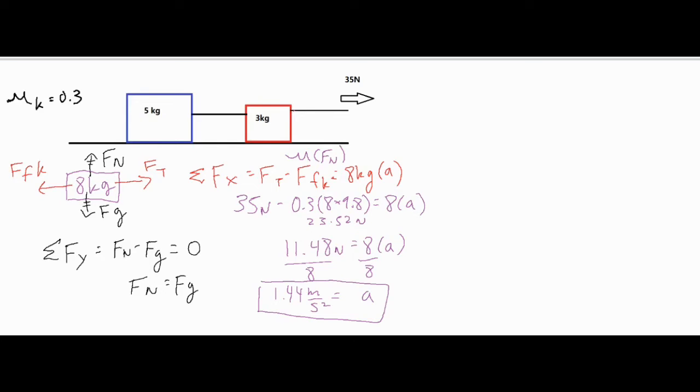Now what we can do is if we analyze each of the boxes on their own as their own separate systems, we have the three kilogram block that has an FT going to the right, we'll call this FT1. It has the force of tension pulling it backwards, we'll call it FT2, force of kinetic friction because it's sliding, and then we have our vertical forces again, which aren't as significant. Force of gravity down, normal force up, which are going to be the same value opposite directions.